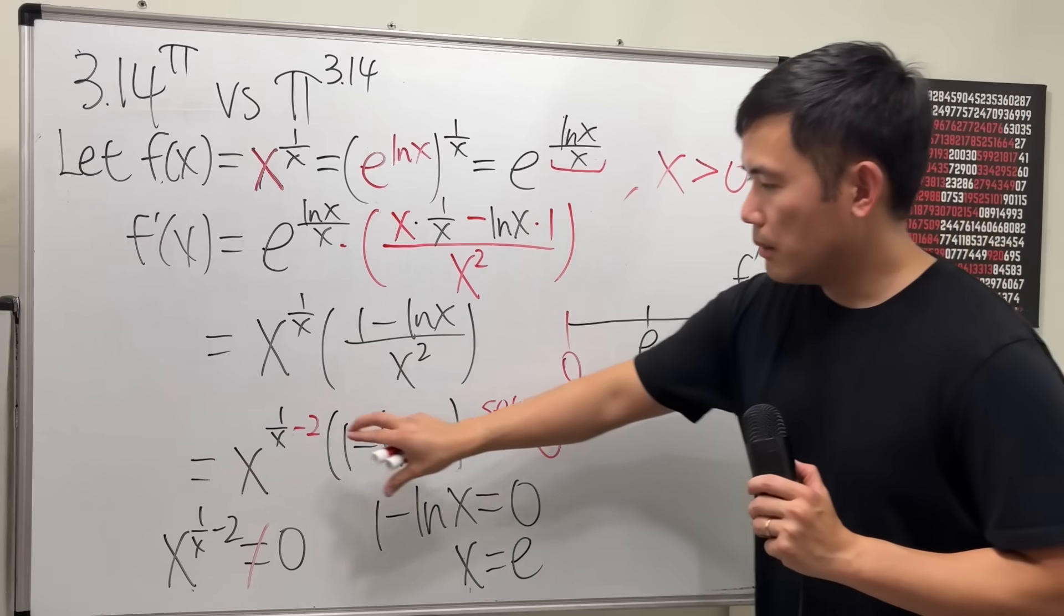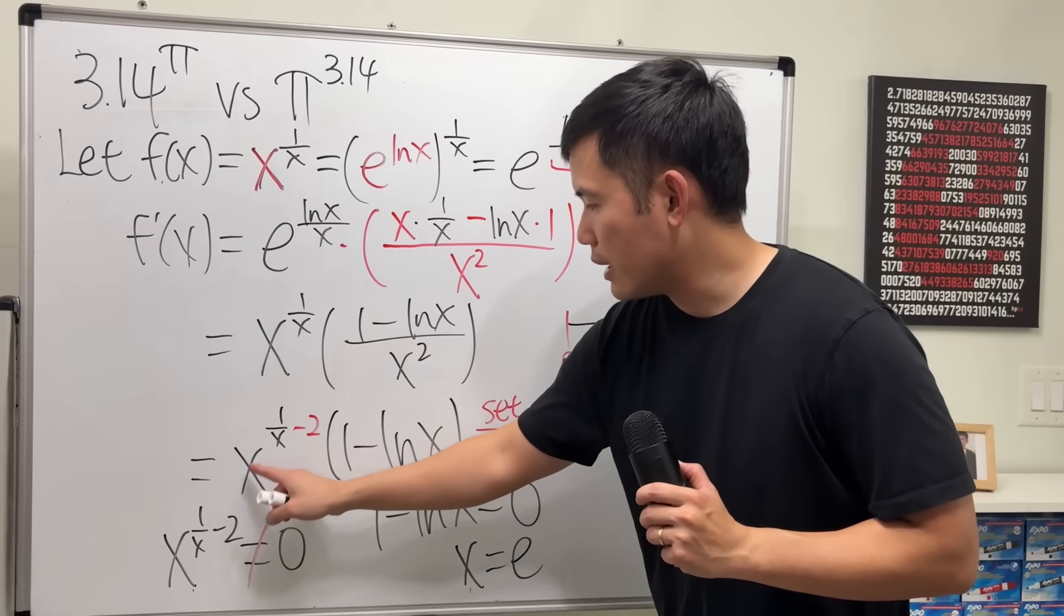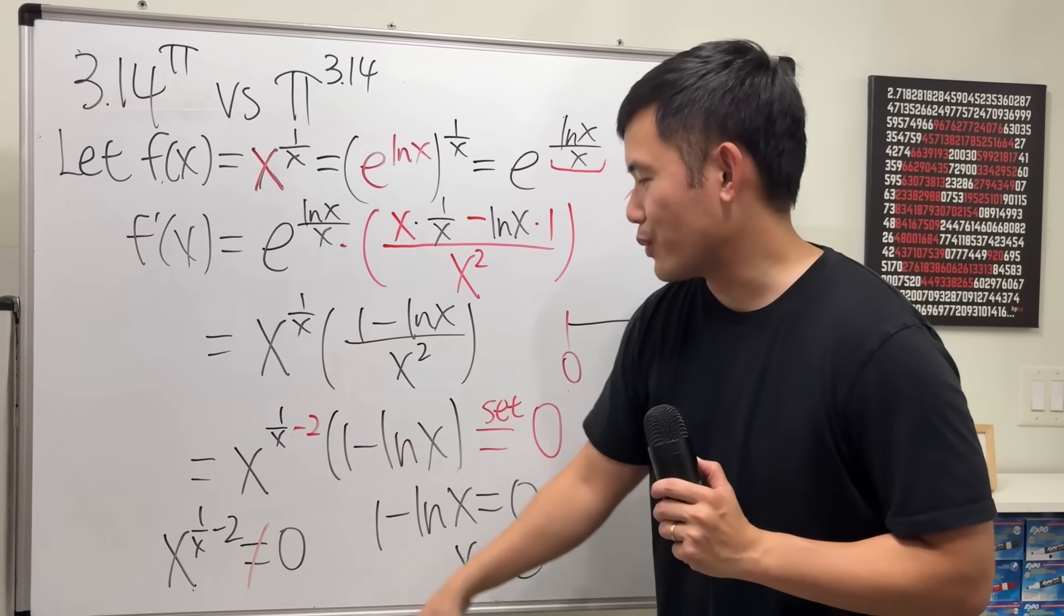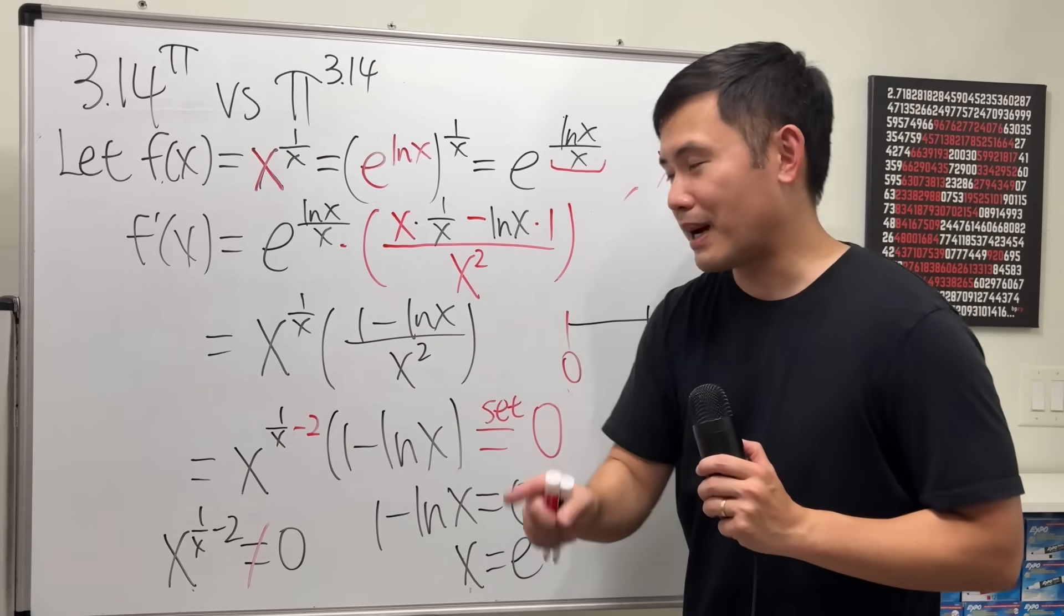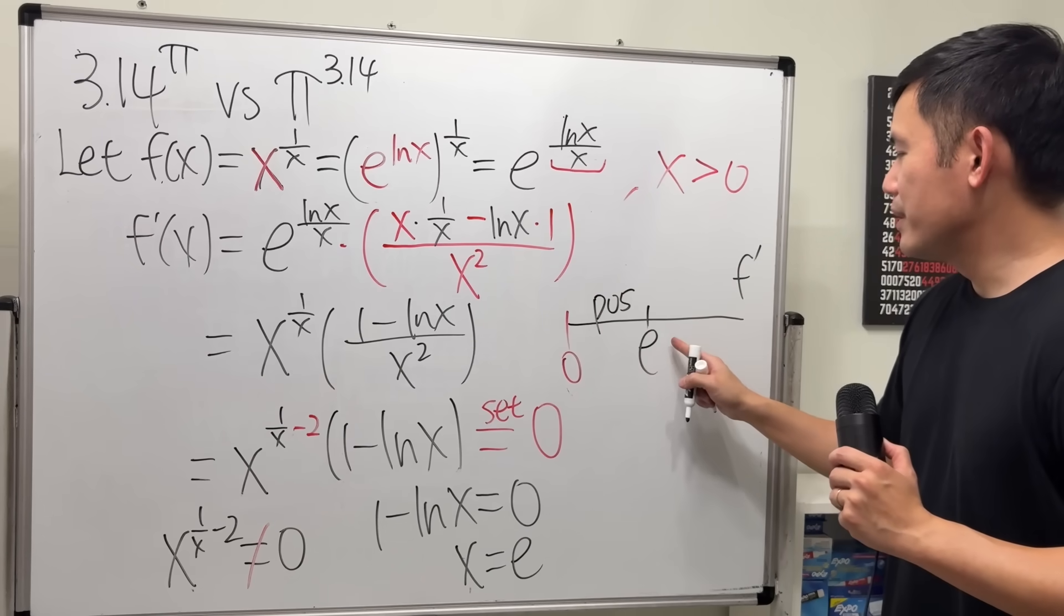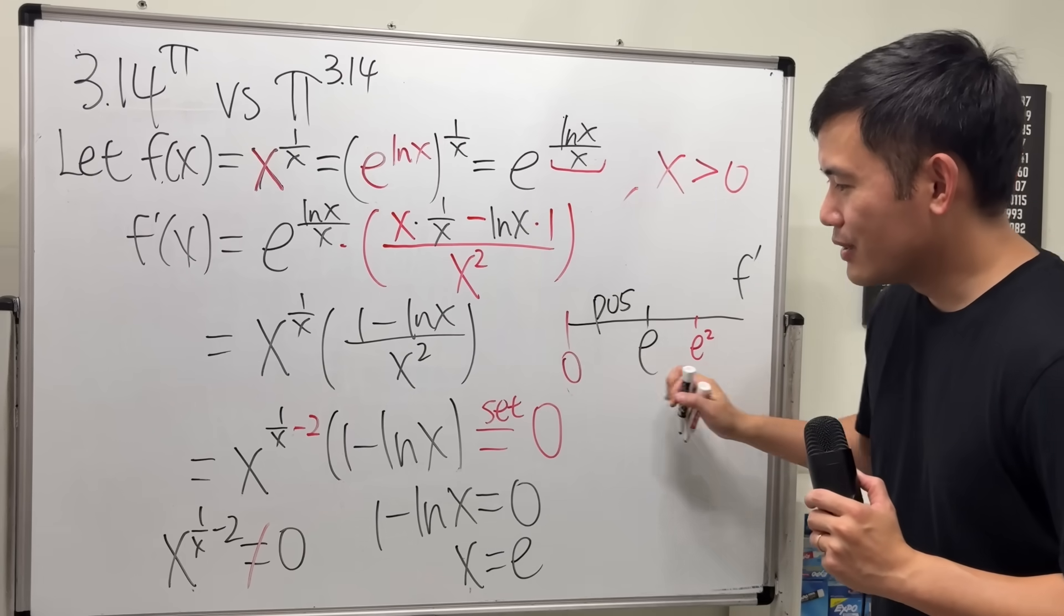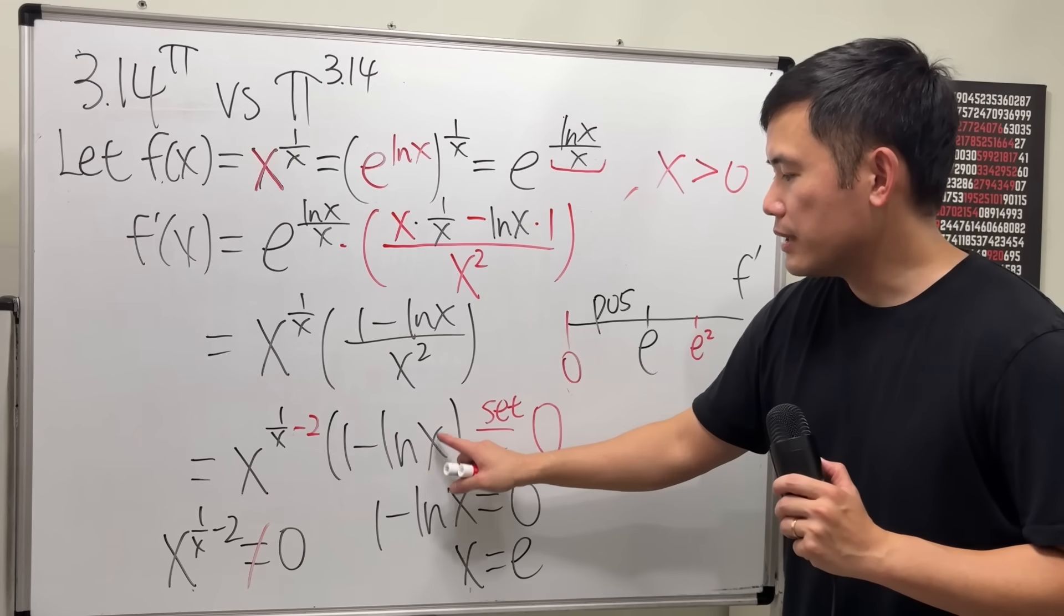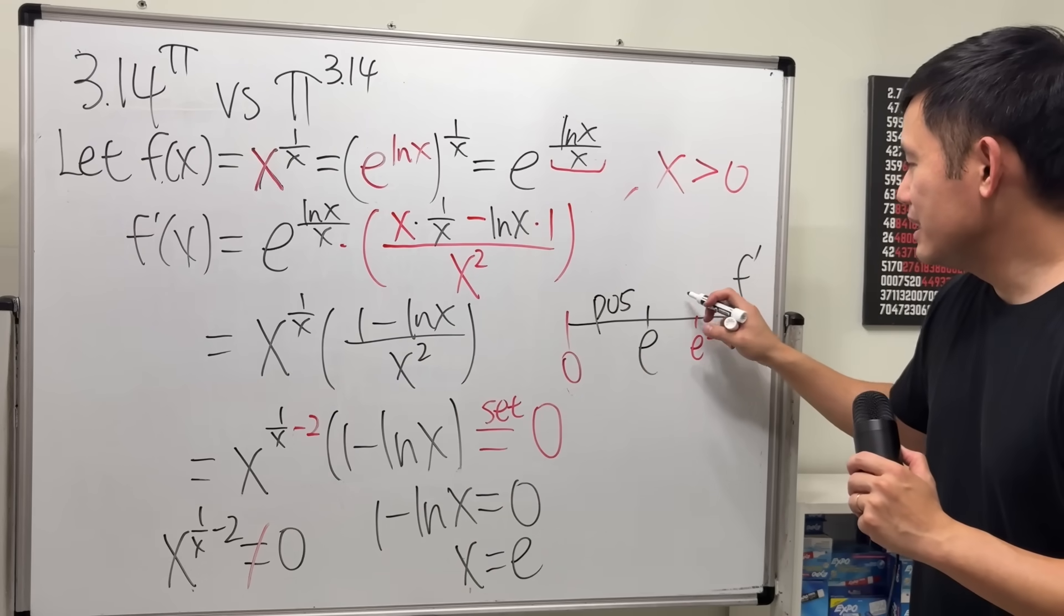Now, I'm going to pick a number in between 0 and e, let's say 1, plug into the first derivative right here. Plug in 1, that's 1. 1 minus 2 is negative 1, that's just 1. And then, plug in 1 in here, this is 0, we have just 1. And 1 is positive. Now, pick a number bigger than e. You can use e to the second power. And you can plug into here, that will be positive. ln e to the second power is just 2. 1 minus 2 is negative 1, so positive times negative is negative.